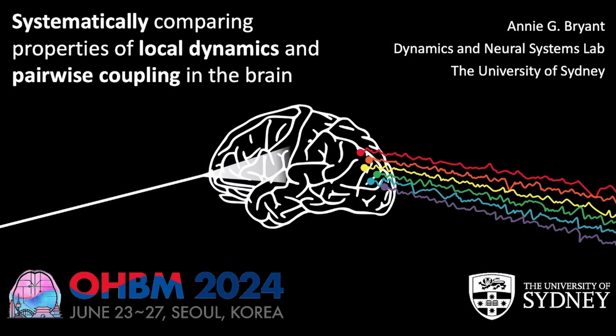Hello everyone. My name is Annie Bryant, and I'm a PhD student working with Ben Fulcher and Max Schein at the University of Sydney. Today I'll be sharing about the project that's formed the core of my PhD thesis, in which I've been systematically comparing local dynamics and pairwise coupling in the brain.